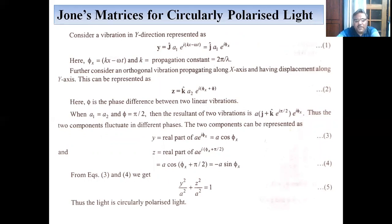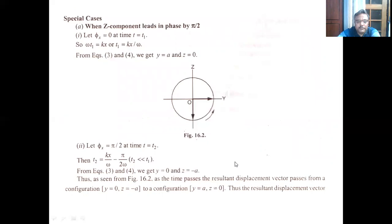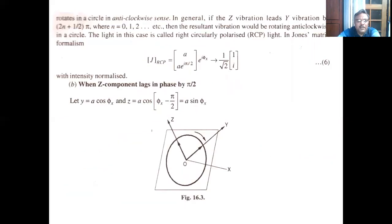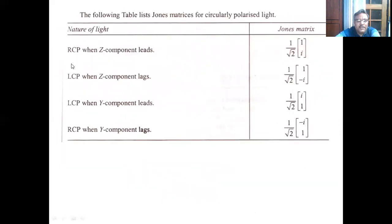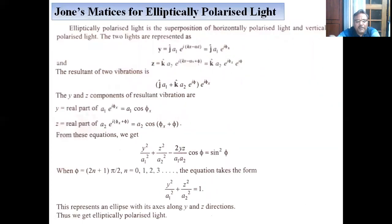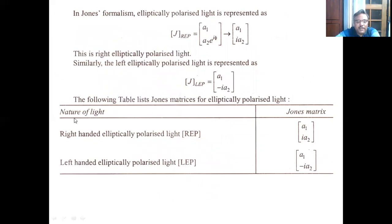These are the matrices for circularly polarized light — the equation of a circle underlies the theory. The right circularly polarized matrix and left circularly polarized matrix are given, including cases where the right or y component is leading. We also have the matrices for elliptically polarized light, both right-handed and left-handed. This completes the matrices for linearly, circularly, and elliptically polarized light, along with the polarizer and wave-plate matrices.